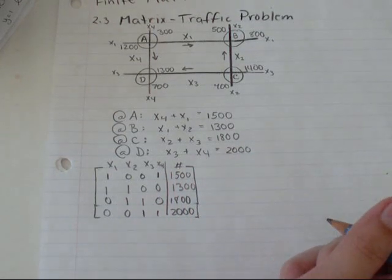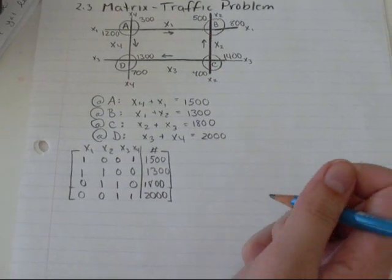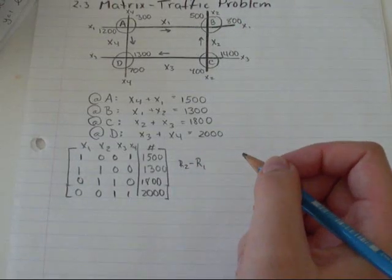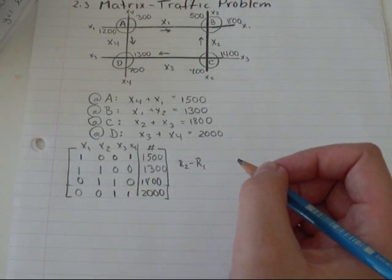so the first step I did to solve this matrix, I did R2 minus R1 and that gave me, turned this into a zero.